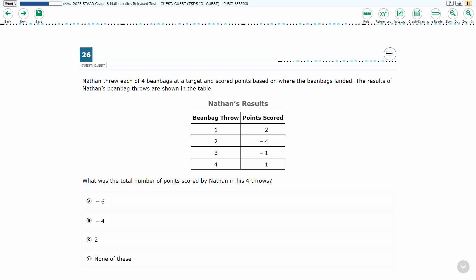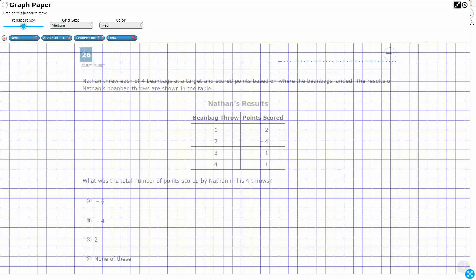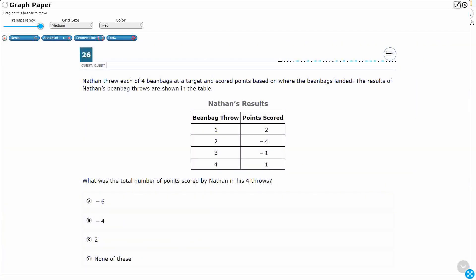We've got Nathan throwing some beanbags, and he gets a 2, a negative 4, a negative 1, and a 1. We need to find the total number of points scored, and we have a tricky answer there, D, none of these. So we don't want to just automatically choose that, but that is a possibility.